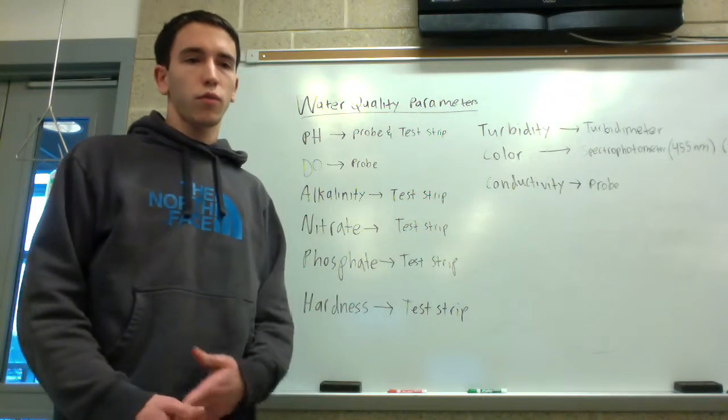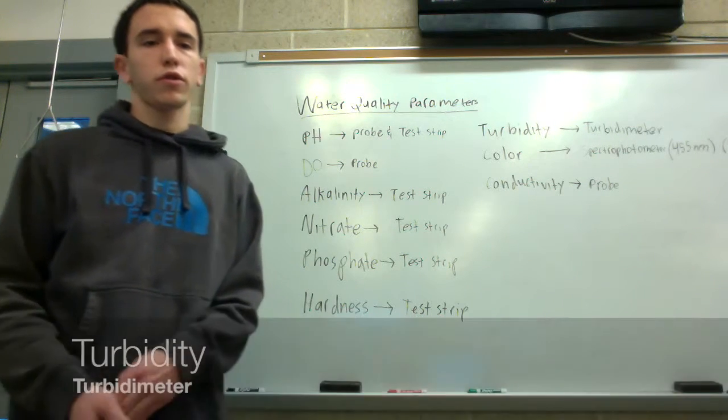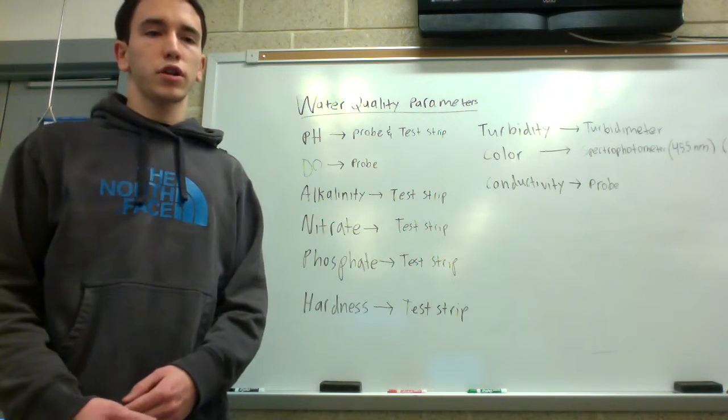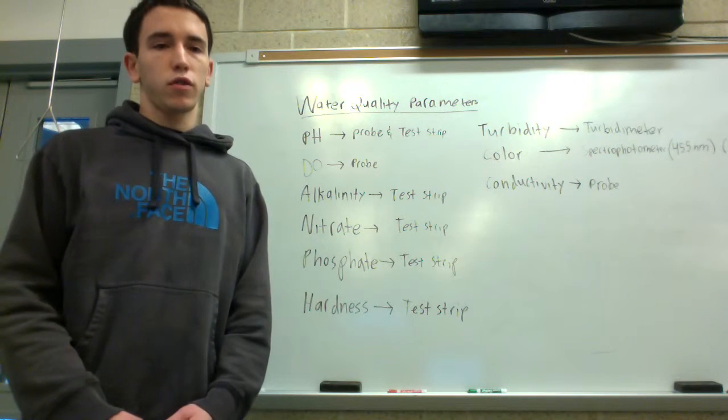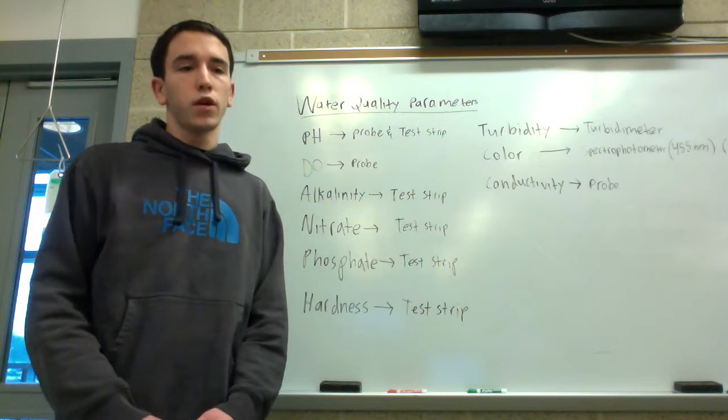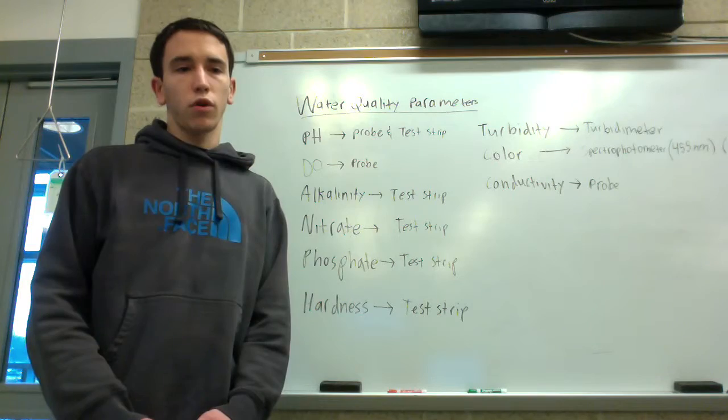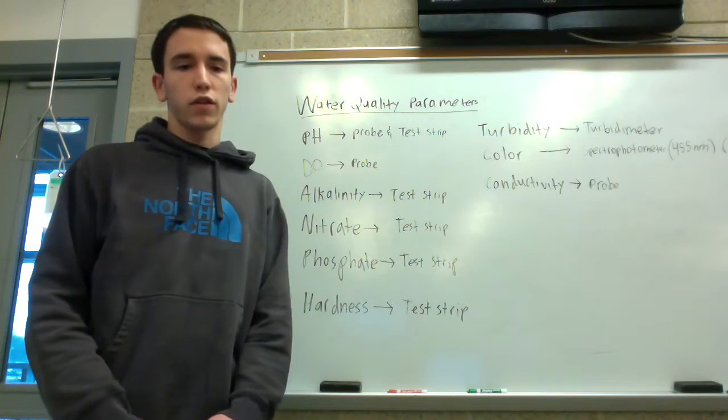Next you'll determine the turbidity of your sample, which is the tendency of water to scatter light. It's measured in NTUs and determines the amount of suspended solids present in your water sample. Less than 5 NTUs appears clear. Disinfected water should be below 1 NTU.